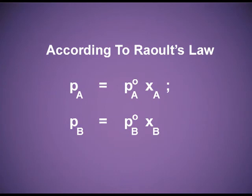Mathematically, an ideal solution obeys Raoult's Law. The partial vapour pressure of A equals the vapour pressure of pure A multiplied by the mole fraction of A. Similarly, the partial vapour pressure of B equals the vapour pressure of pure B multiplied by the mole fraction of B. That completes the explanation of ideal solutions.